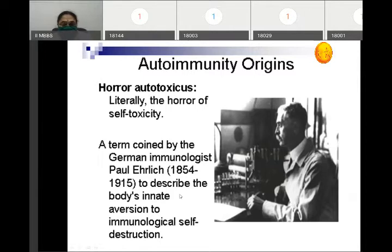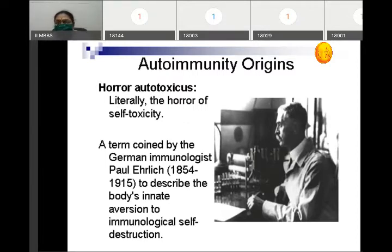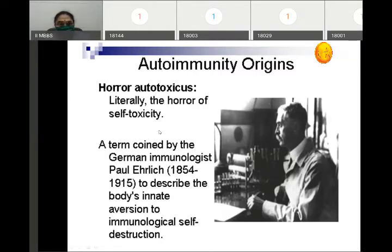Ehrlich observed that when goats are immunized with RBCs of other goats, the goat will develop antibodies against RBCs of the other goat but not against their own self RBCs. This is called horror autotoxicus, as explained by Ehrlich.